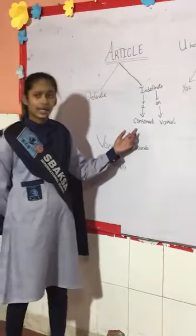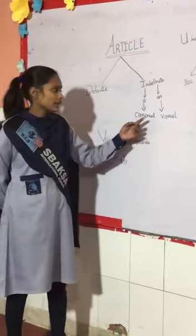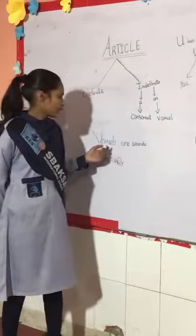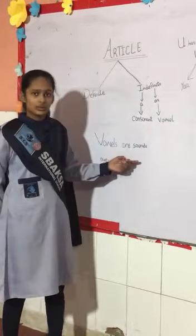For example: cat, dog, pet, etc. Now the question is: what are vowels? Vowels are sounds.